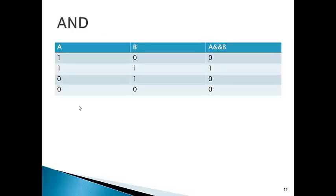Now what about the AND gate truth table: 1 AND 0 is 0; 1 AND 1 is 1; 0 AND 1 is 0; 0 AND 0 is 0.